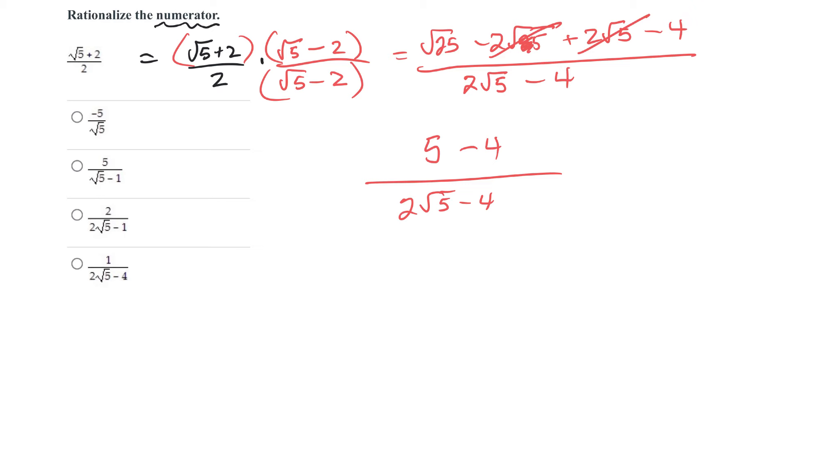On the top, 5 minus 4 is 1, over 2 root 5 minus 4.